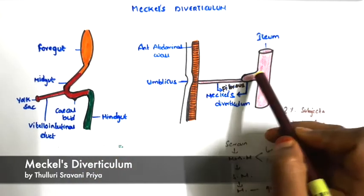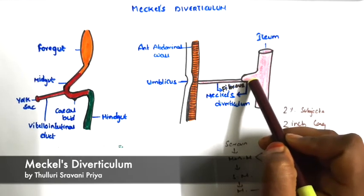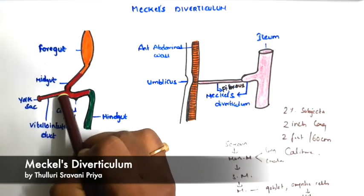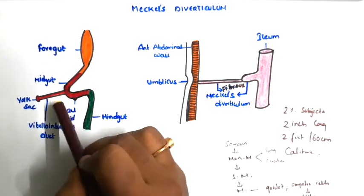Look here, this is the ileum and this is the proximal part of the vitelline duct. This midgut will also make the small intestine.